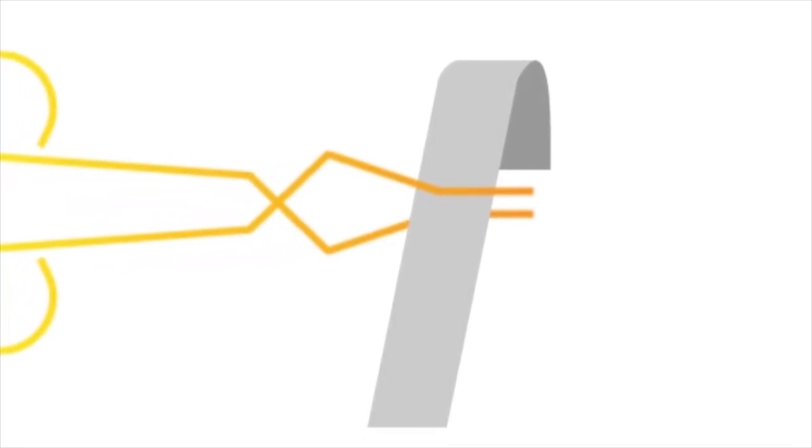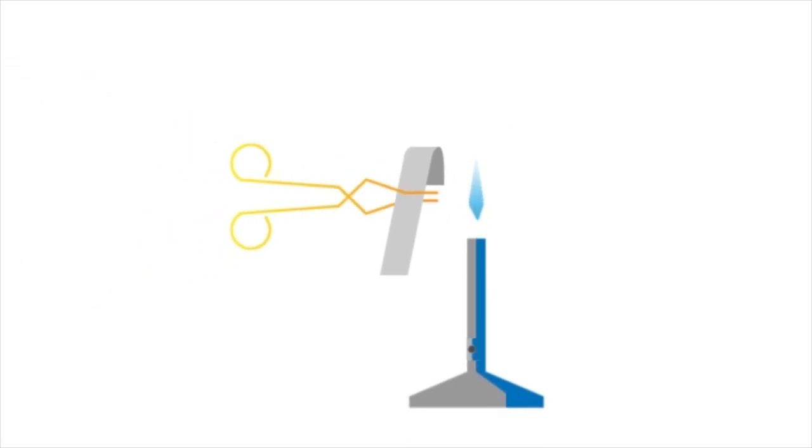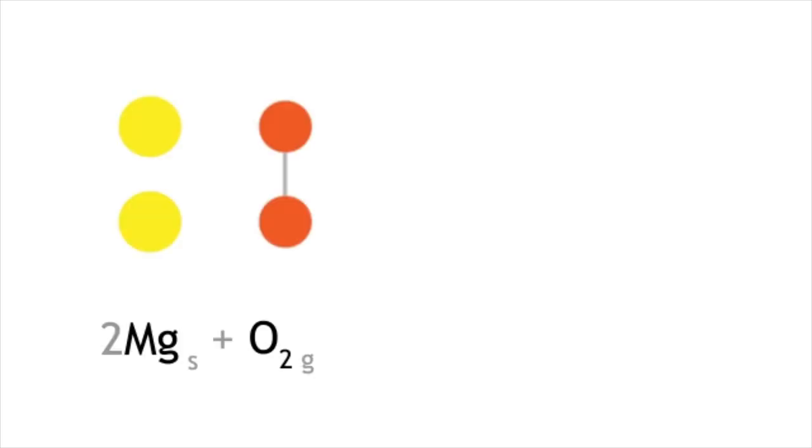Using a pair of tongs, take the magnesium strip and hold it to a roaring Bunsen burner flame. The combustion of magnesium proceeds with a bright white flash. Take care not to look at this flash. Magnesium reacts with oxygen to produce magnesium oxide which is a white solid.